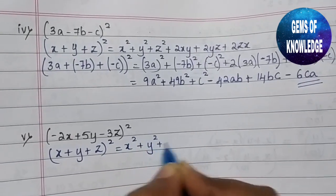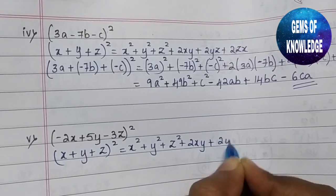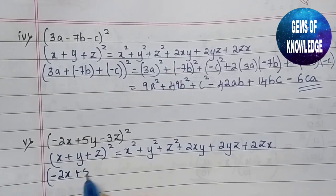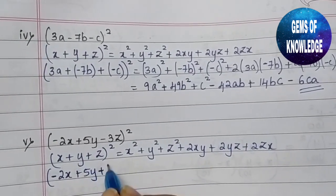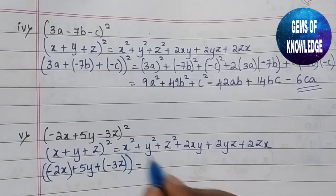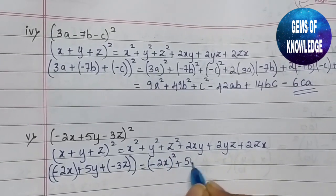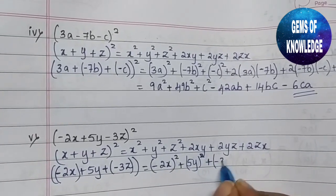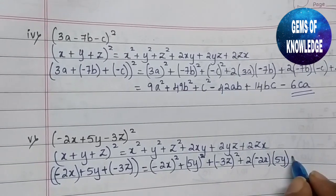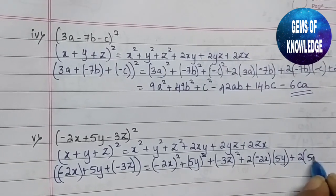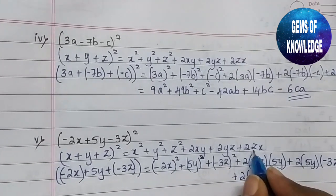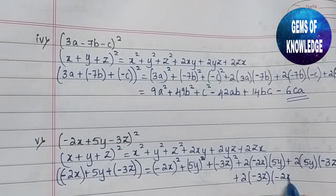The next question is also the same form: (x + y + z)² = x² + y² + z² + 2xy + 2yz + 2zx. Here x = −2x, y = −5y, z = −3z. Substituting: (−2x)² + (−5y)² + (−3z)² + 2(−2x)(−5y) + 2(−5y)(−3z) + 2(−3z)(−2x).